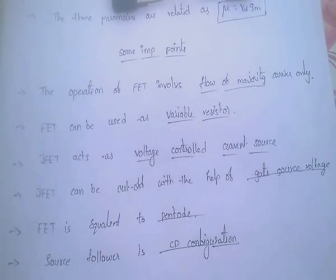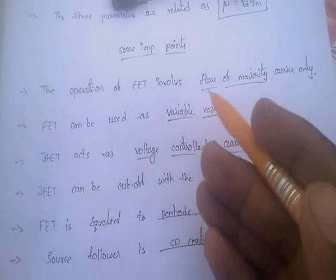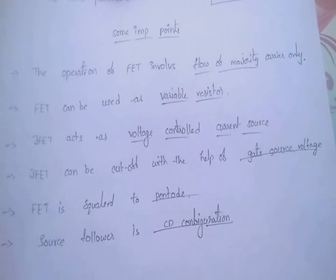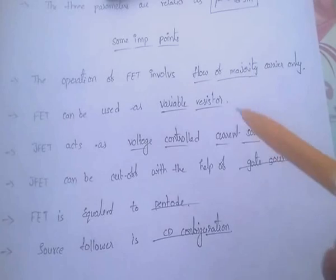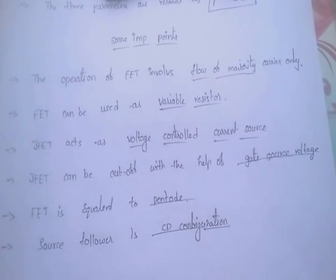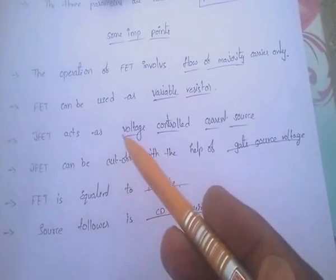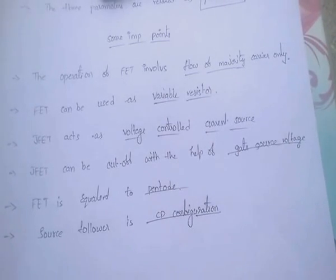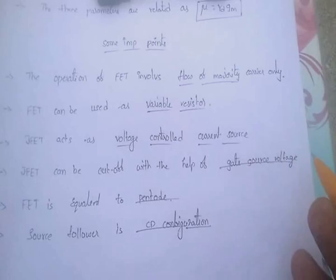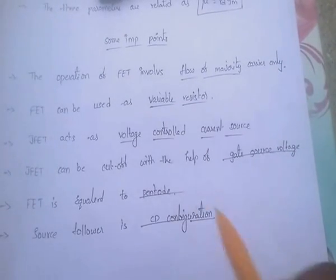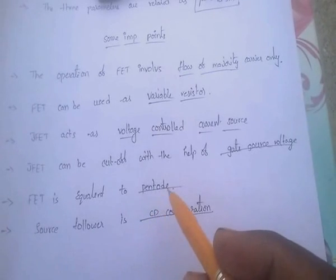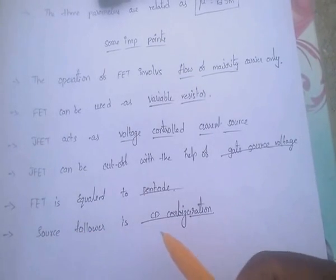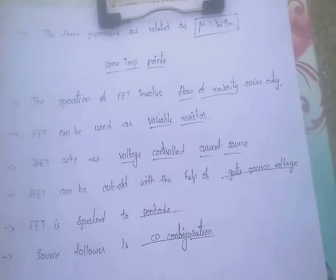Some important points regarding FET: the operation involves flow of majority carriers only, hence it is called a Unipolar Device. FET can be used as a variable resistor and as a DC Chopper. JFET acts as a voltage controlled current source. JFET can be cut off with Gate-Source voltage VGS. FET is equivalent to a Pentode, and it is called a Source Follower when in Common Drain configuration.